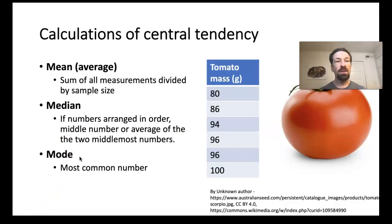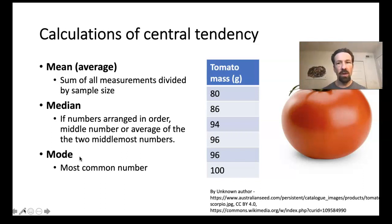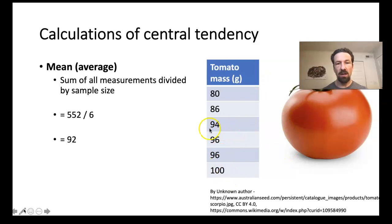Looking at measures of central tendency, the first is the mean or average. To calculate this, sum all of the measurements and then divide by the sample size—the number of items measured. For the tomato masses shown, perhaps from a recent farmers market, there are six measurements that add up to 552 grams. Dividing by the sample size of six gives an average mass of 92 grams.